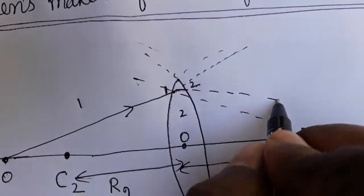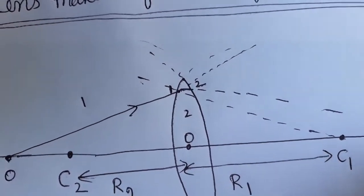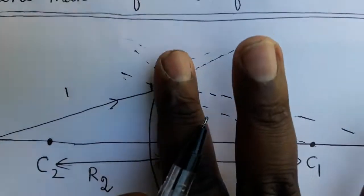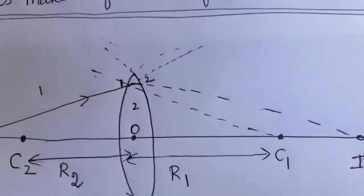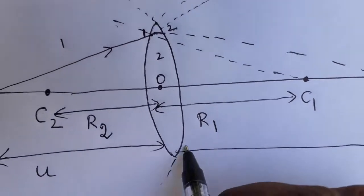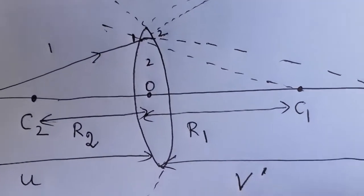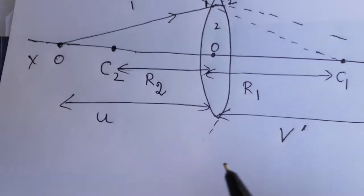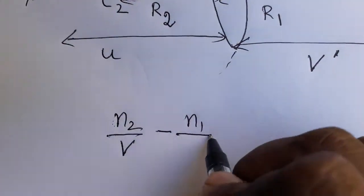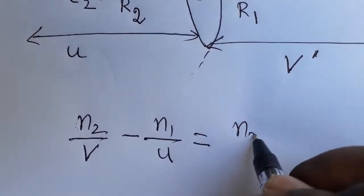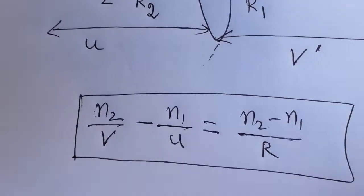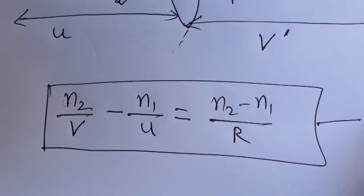If we imagine the second surface is not there, the image would form at a point which I call v'. This is a virtual image from refraction at the first surface. From the refraction at a convex surface, we know: n2/v − n1/u = (n2 − n1)/R.